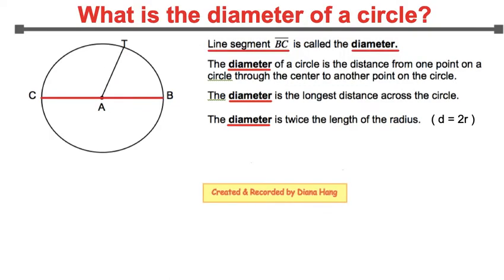What is the diameter of a circle? In this picture, you have B, which is on the circle, C, which is also on the circle. Letter A still represents the middle of our circle.